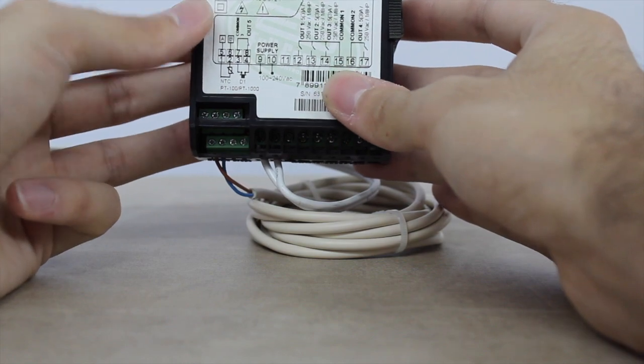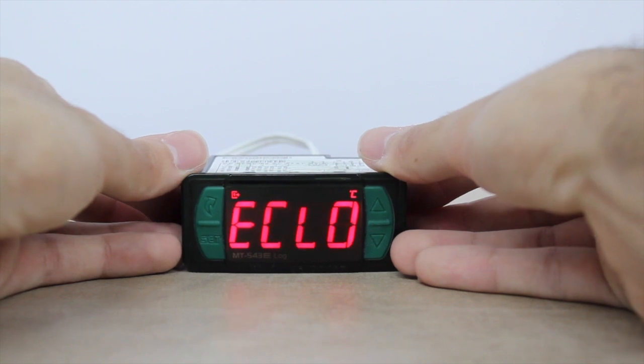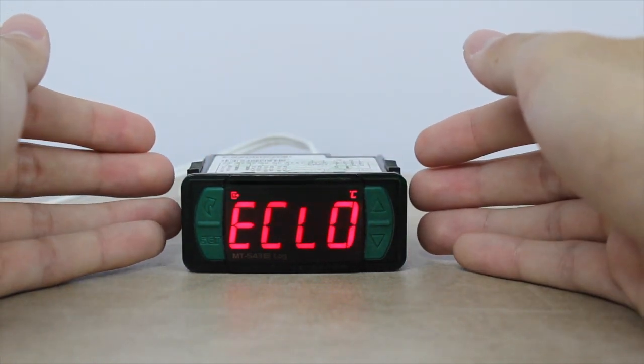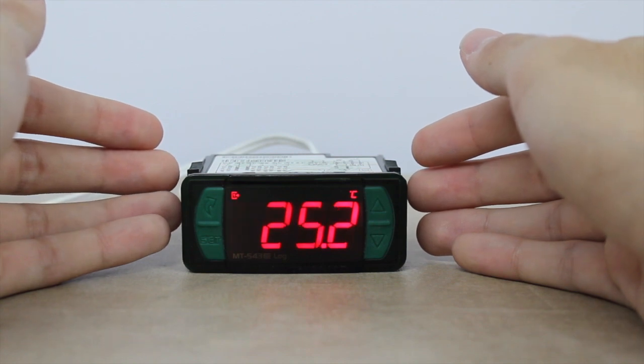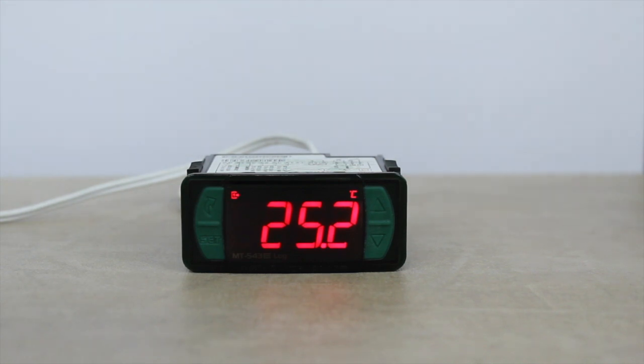The AMET543 E-Log can read PT100 or PT1000 sensor, that are typically used for extreme temperatures. Or, it can be used the AMET543 E-Log temperature sensor from Full Gauge SD70.